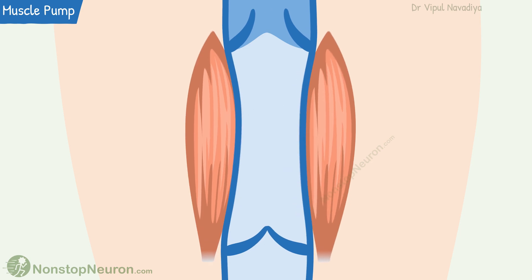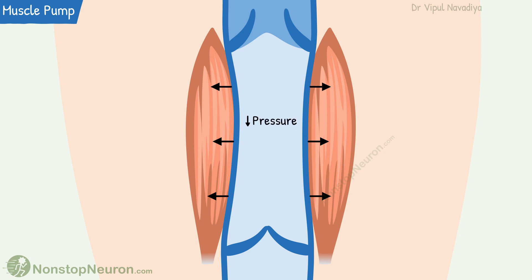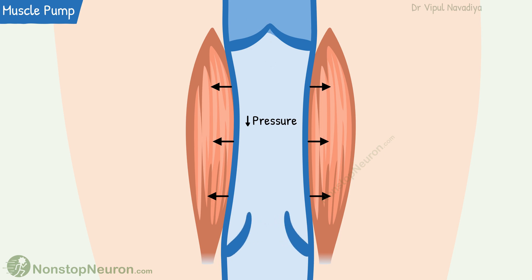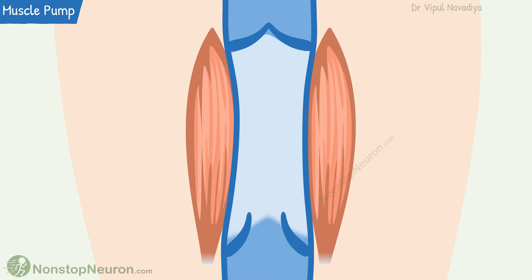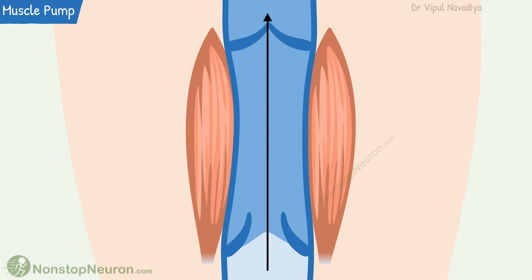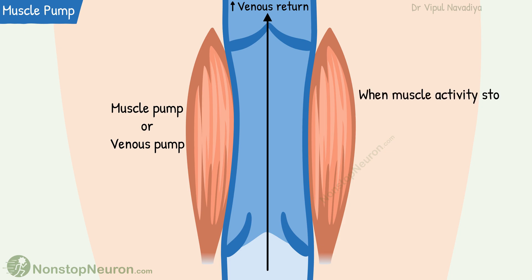The net result is movement of blood from the middle segment to the upper segment. When the muscles relax, the vein expands and there is a local fall in pressure. Blood from the upper segment tends to flow back, but closure of the upper valve prevents backflow. The valve on the lower side opens and the vacuum in the middle segment sucks blood from the lower segment. With each contraction and relaxation cycle, blood is continuously pumped toward the heart — this is called the muscle pump or venous pump.